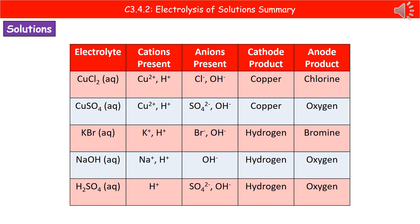This pattern continues throughout. Whenever the cations include an element less reactive than hydrogen, that forms at the cathode. Otherwise, like with KBr, potassium is more reactive than hydrogen, so hydrogen forms. For anions, only group seven elements—chlorine in the first row, bromine in the third row—form at the anode. All others produce oxygen. Remember these rules, and you'll be able to predict what's made at either electrode.